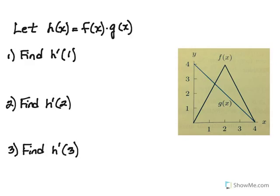Now let's look at problems where you work from the graph of a function. The blue function going diagonally left to right is g of x. The upside-down v, which looks like an absolute value graph, is f of x. At the top we're given that h of x is the product of f and g. We want to first find h prime of 1 using the product rule: f of 1 times g prime of 1, plus g of 1 times f prime of 1.